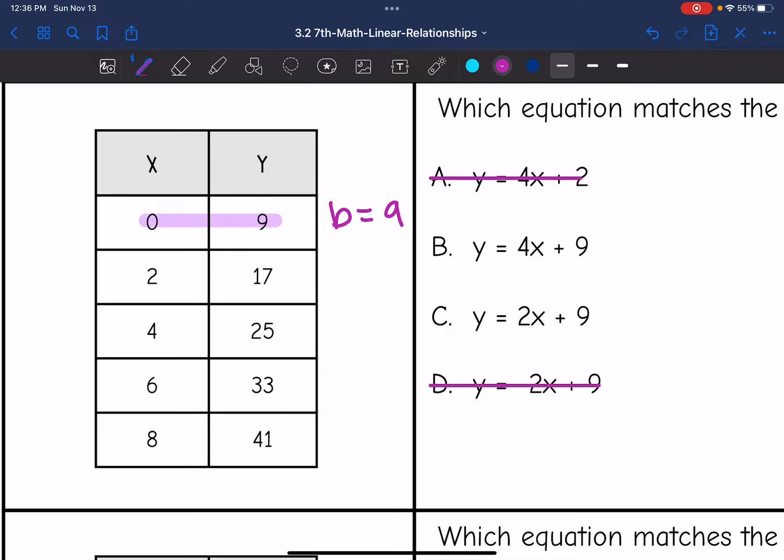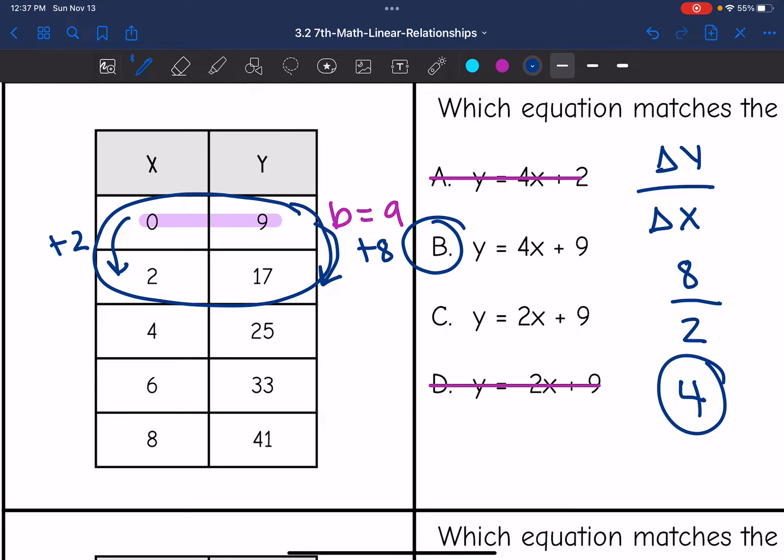So now I just need to actually find the rate of change, which remember is the change in y divided by the change in x. So I'm just going to focus on these two ordered pairs right here. From 9 to 17, that change in the y value is plus 8. And then in the x values from 0 to 2 is plus 2. So the rate of change is 8 over 2, which simplifies to 4. So our equation is y equals 4x plus 9.